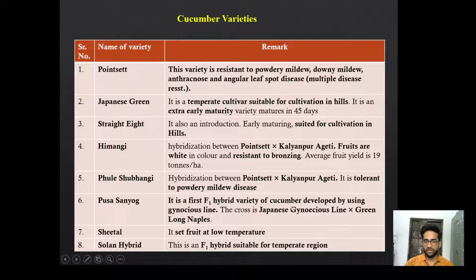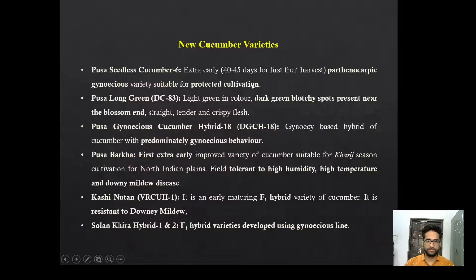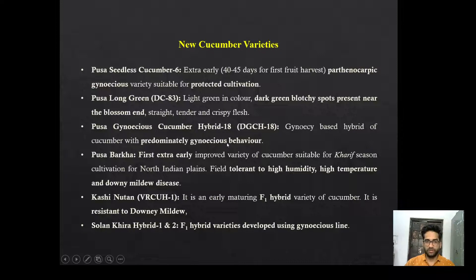Pusa Sayog is the first F1 hybrid variety developed using a gynoecious line. Shital is a low-temperature tolerant variety. New cucumber varieties include Pusa Seedless Cucumber 6, Pusa Long Green (GC 83), and Pusa Gynoecious Cucumber Hybrid 18 — a hybrid based on the gynoecious line. Pusa Barkha is the first extragynoecious variety, tolerant to humidity, high temperature, and downy mildew disease. Kashi Newton, Solan Kheera Hybrid 1 and 2 are also new varieties.